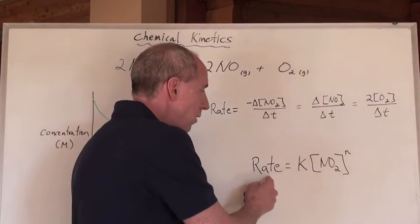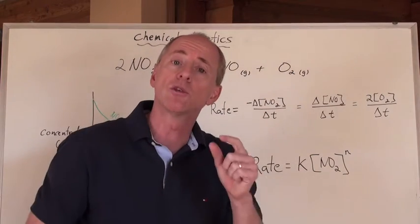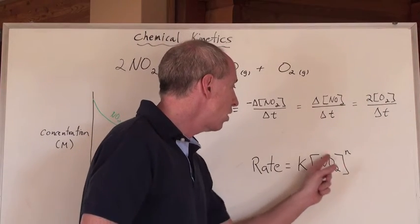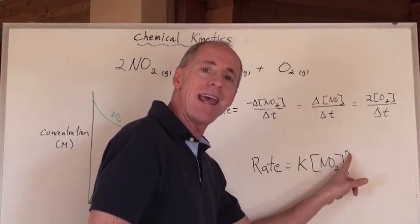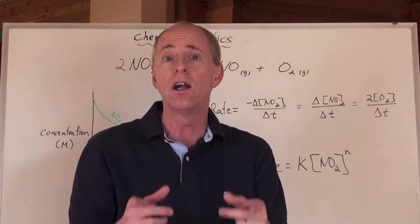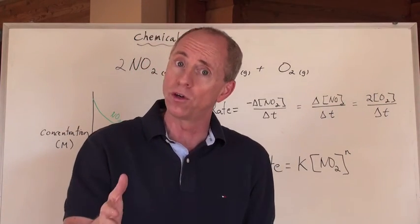So the rate of the reaction is going to equal K, which is going to be called a rate constant. I'm going to show you how to derive that in the units for that too. Times the concentration of the NO, but that N there is the power to which that concentration is taken. It's called the order of the reactant or the order of the reaction.